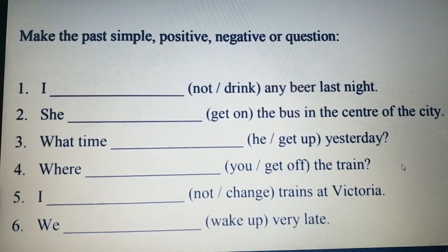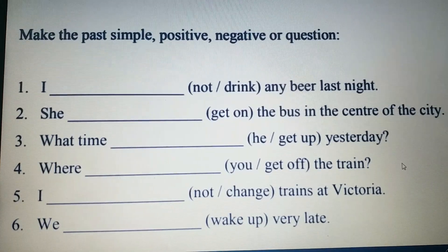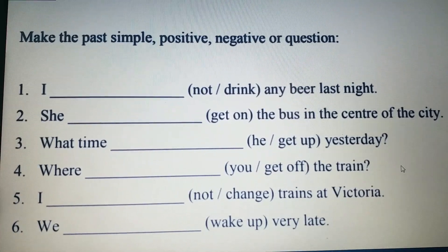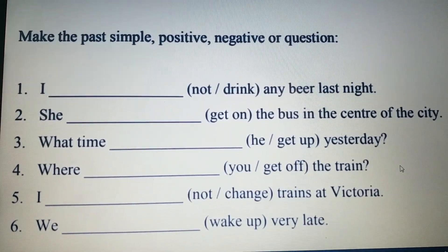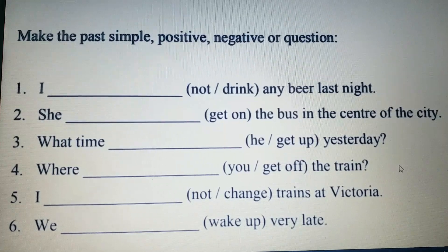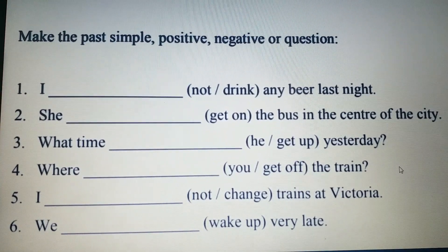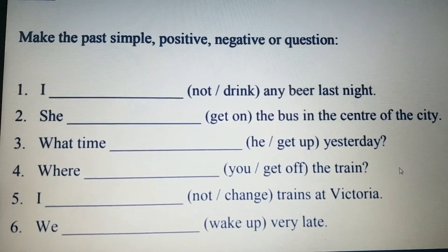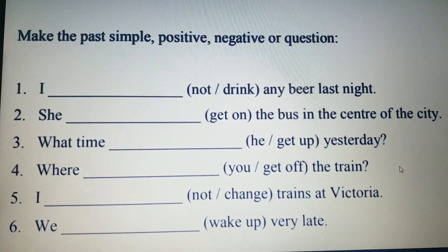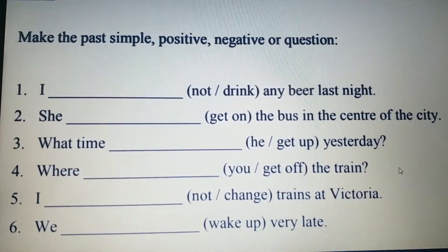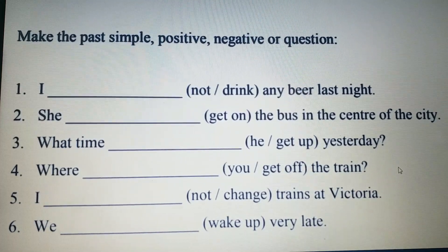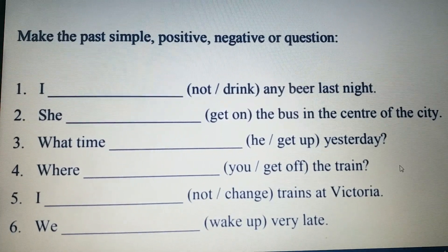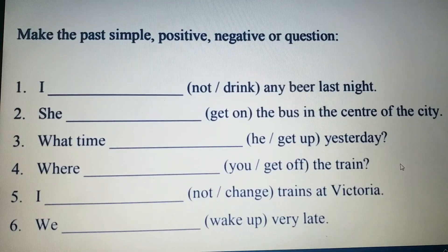Next: 'What time ___ he get up yesterday?' Our verb is 'get' and the subject is 'he.' We are supposed to make an interrogative statement. In an interrogative statement, we place 'did' before the subject. So: 'What time did he get up yesterday?' Next: 'Where ___ you get off the train?' — framing the question the same way: 'Where did you get off the train?'